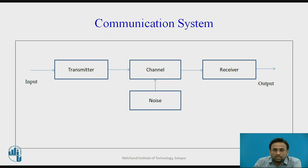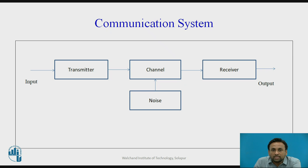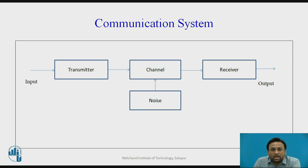The most important thing is noise, which is added to the channel. Noise is of two types: man-made noise and natural noise. Natural noise includes cosmic rays and sun radiations, which cause signal degradation. Man-made noise includes industrial noise, pumps, scooters — whatever noise is produced by human activity is known as man-made noise.